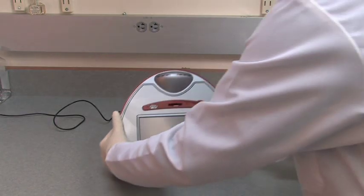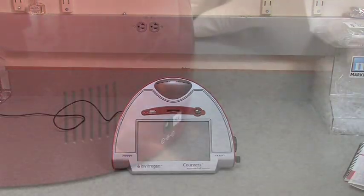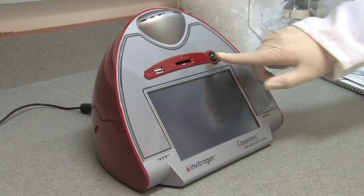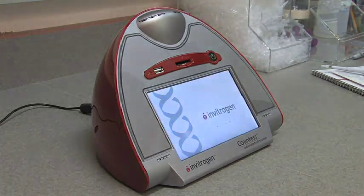Find a nice flat dry bench space that is free from vibration. Plug the Countess instrument into a nearby electrical outlet and turn the instrument on. It takes about 24 seconds to warm up, then you're ready to go.